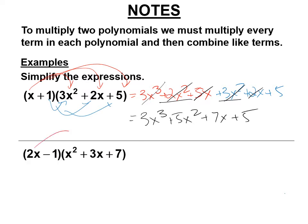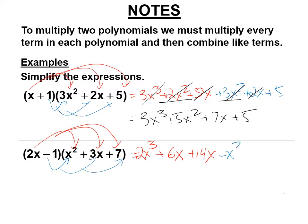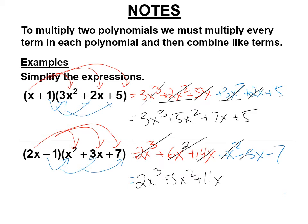We're going to multiply everything times 2x: 2x times x squared is 2x cubed. 2x times 3x is 6x squared. 2x times 7 is 14x. Then we multiply everything by negative 1: minus x squared, minus 3x, minus 7. We look for like terms — 2x cubed stays, 6x squared minus x squared is 5x squared, 14x minus 3x is 11x, and then minus 7.